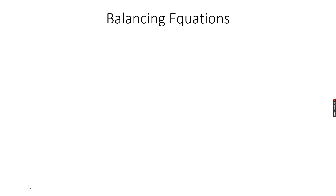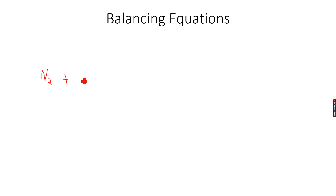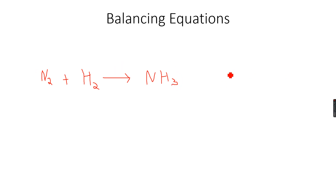Balancing equations is our next topic, and it is very important in stoichiometry. For example, we have the Haber process, where hydrogen and nitrogen react to give ammonia. However, this equation is called an unbalanced equation.